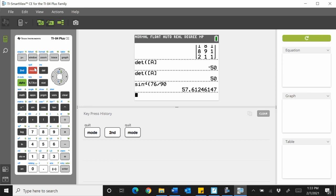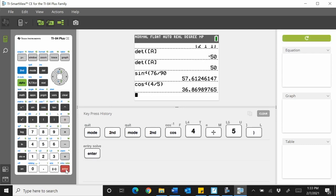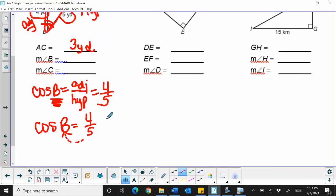Now, I want to find the angle, so I'm going to use my second or my inverse button, cosine of 4 divided by 5, or 4 fifths. And that will give me 38.9. So we'll just round to the closest tenth.